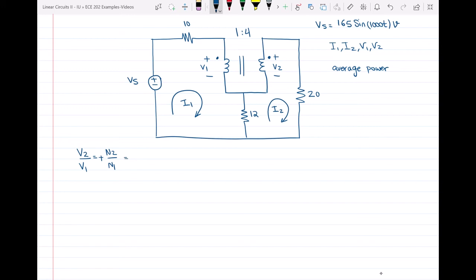N2 is equal to four and this is one. So one of my equations would be V2 minus 4V1 is equal to zero. This will be one of my equations.